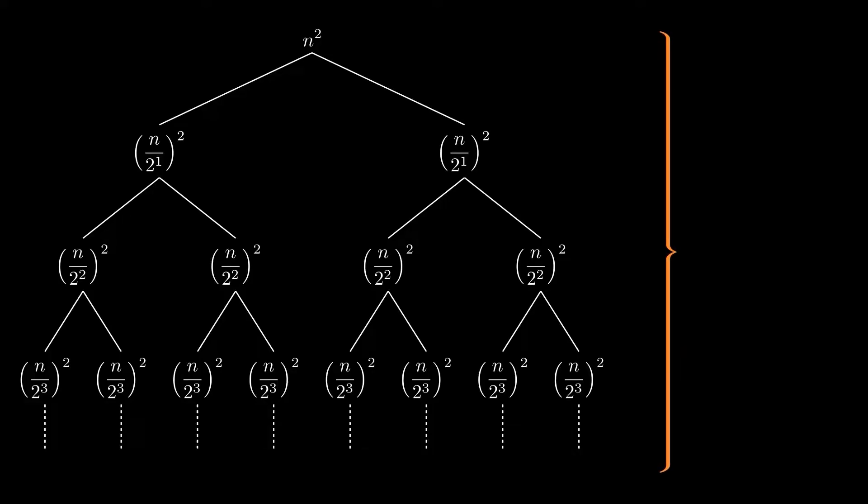In order to find the complexity of the recursive part of the algorithm, we have to find depth of the tree first. Let's consider the bottom-most level where the condition terminates, resulting in a constant value, usually 1. By taking the bottom node value n/b^k = 1, where k is depth of the tree, we get k as log base b of n.